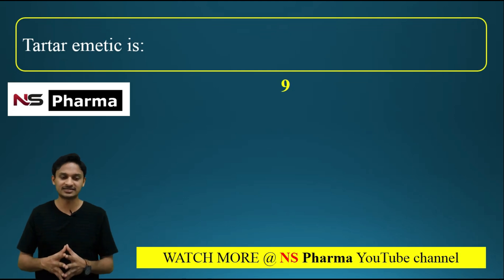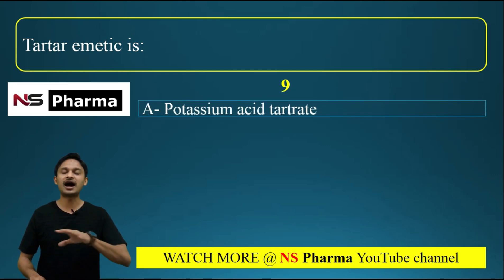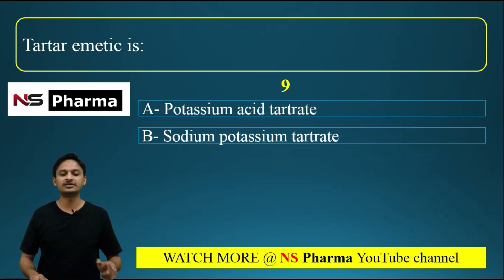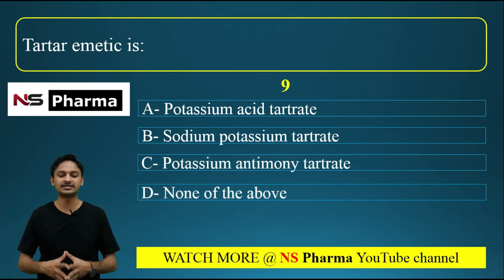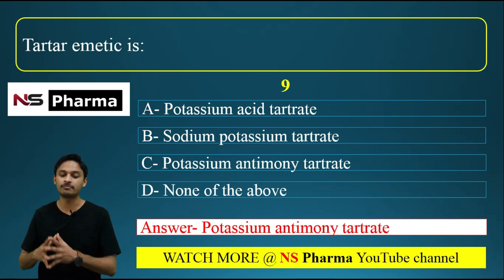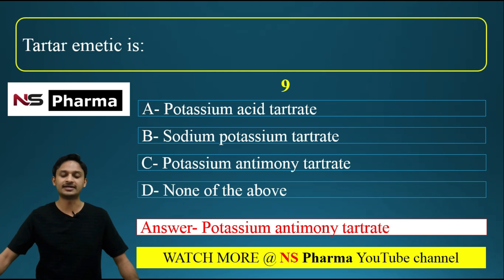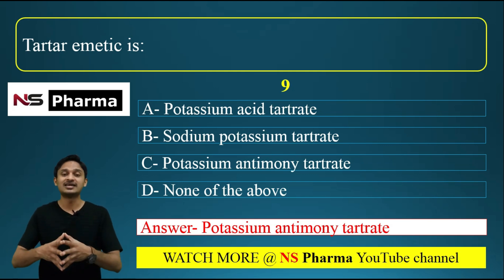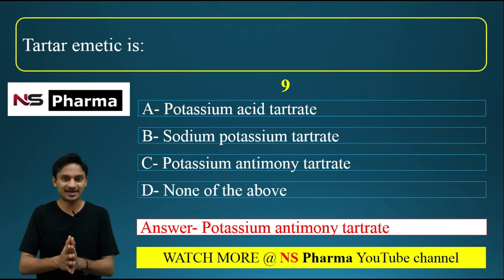Question number 9: Tartar emetic is — options are: A) potassium acid tartrate, B) sodium potassium tartrate, C) potassium antimony tartrate, D) none of the above. The correct answer is option C: potassium antimony tartrate, also called tartar emetic. It is used as an emetic and also as an expectorant.